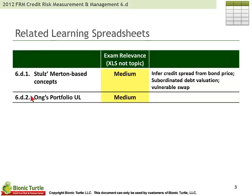In regard to learning spreadsheets 61 and 62: spreadsheet 61 illustrates Stoll's Merton-based concepts, including the subordinated debt valuation — it gets a little tedious but gives concrete understanding to many of Stoll's conceptual statements. Spreadsheet 62 covers Ong's portfolio unexpected loss, giving concrete illustration to the portfolio UL concept, because the Ong reading is quite symbolic and often not self-explanatory.